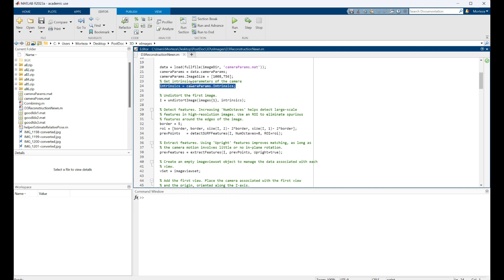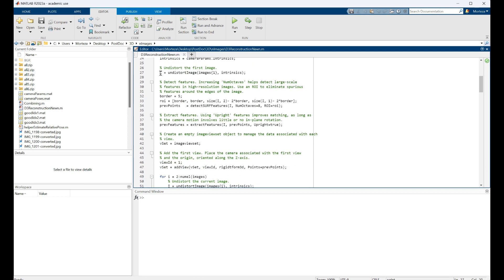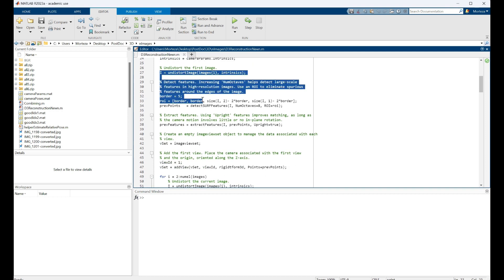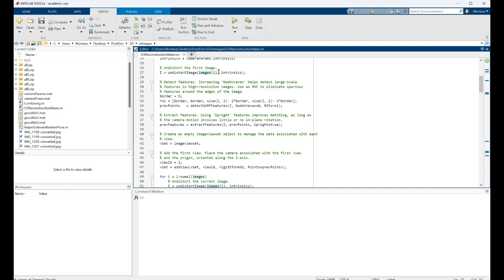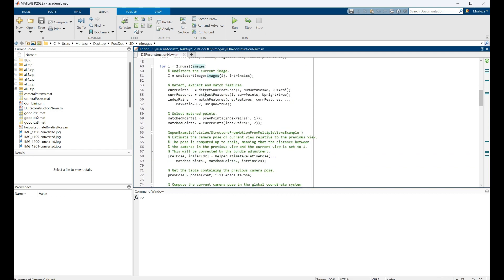And then here you get the camera intrinsic parameters, and from here on you start to detect and extract the features and making the tracks. We start with the first image and we also use the camera intrinsics to undistort the images, and then we go to this loop to build the tracks.